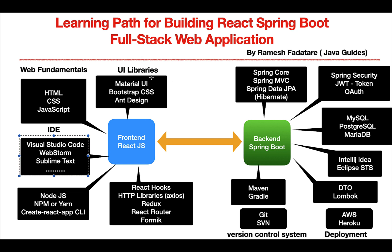Next, UI libraries. Here I've listed a few popular UI libraries you can use in your React application: Material UI, Bootstrap CSS framework, and Ant Design. Ant Design is a very popular library that provides a lot of out-of-the-box components for React applications. Bootstrap CSS is a well-known CSS framework for building responsive websites and web applications. Material UI is also very popular nowadays for building user interfaces.